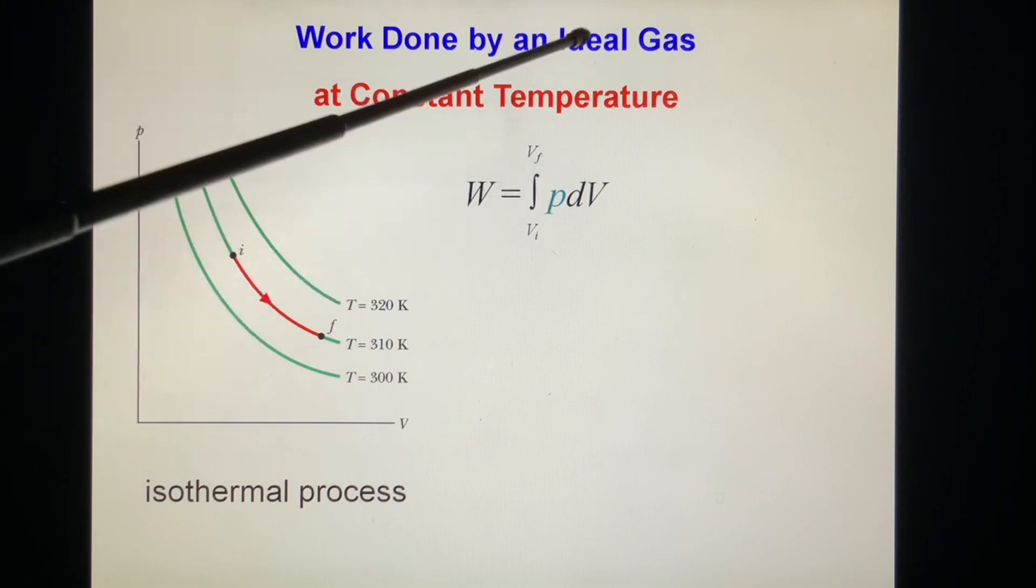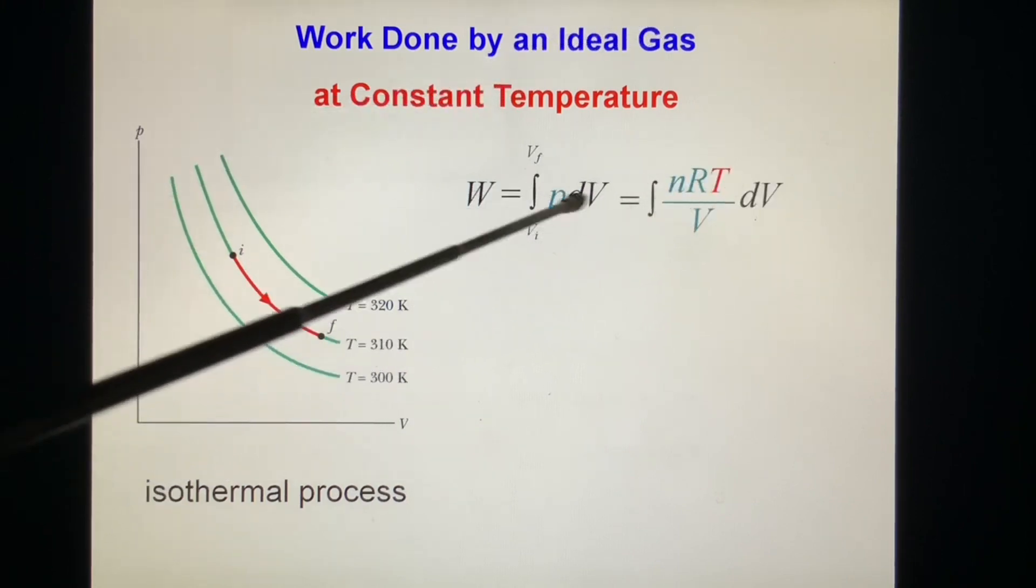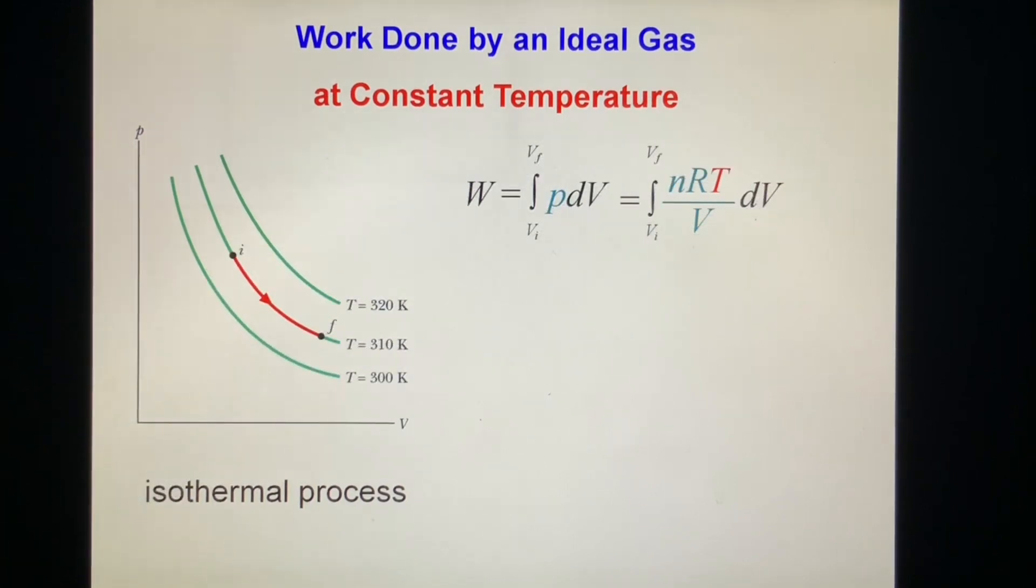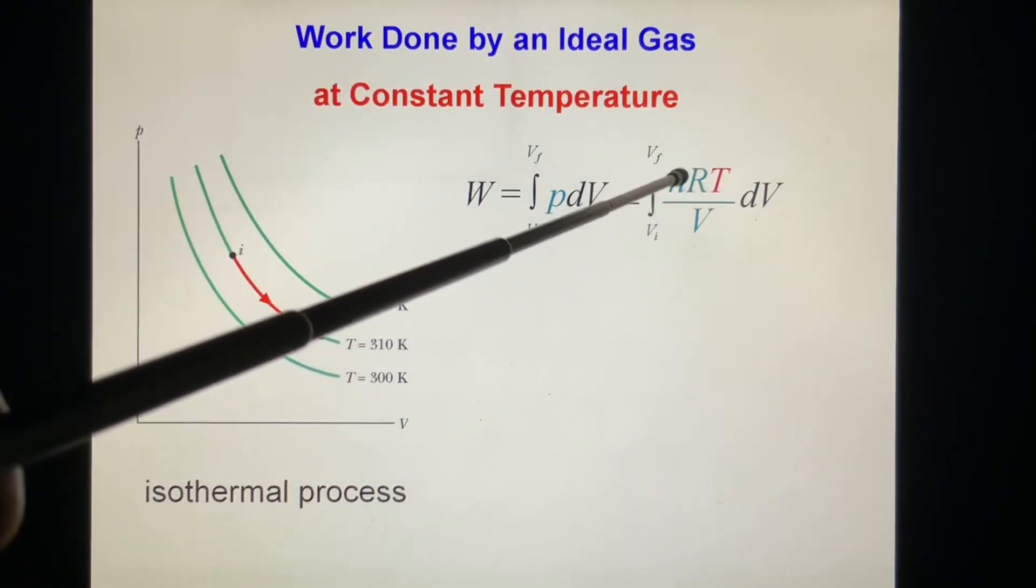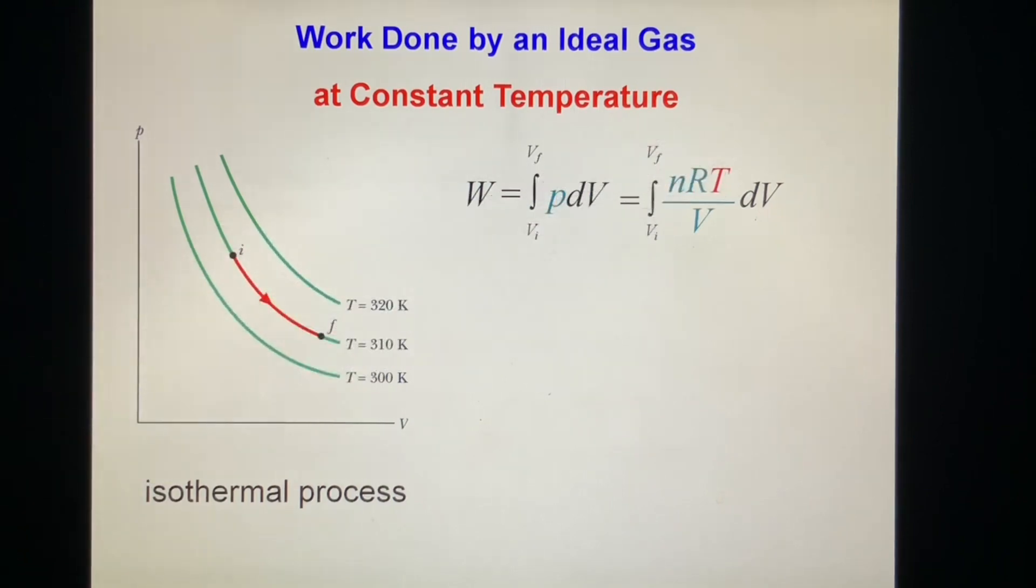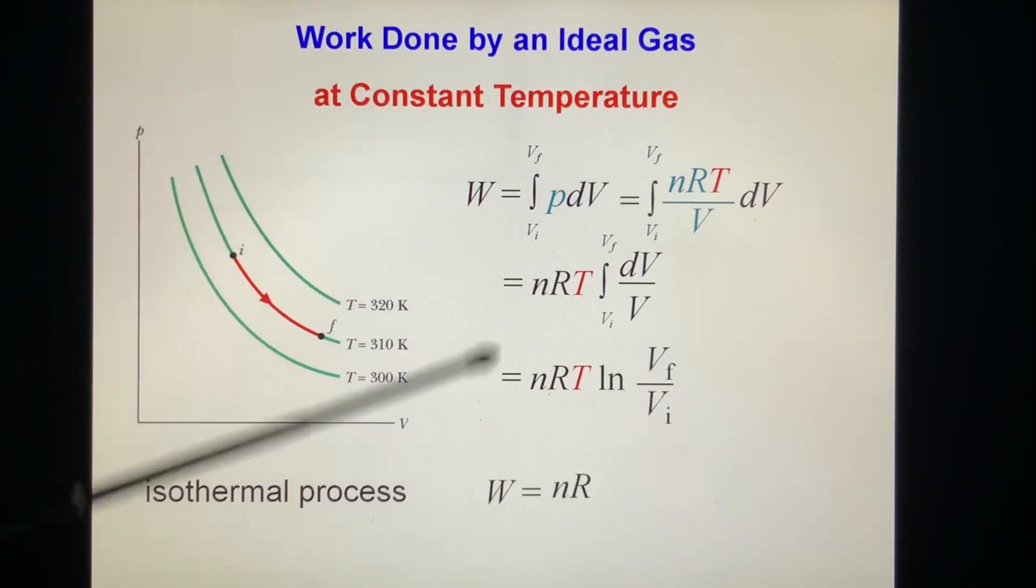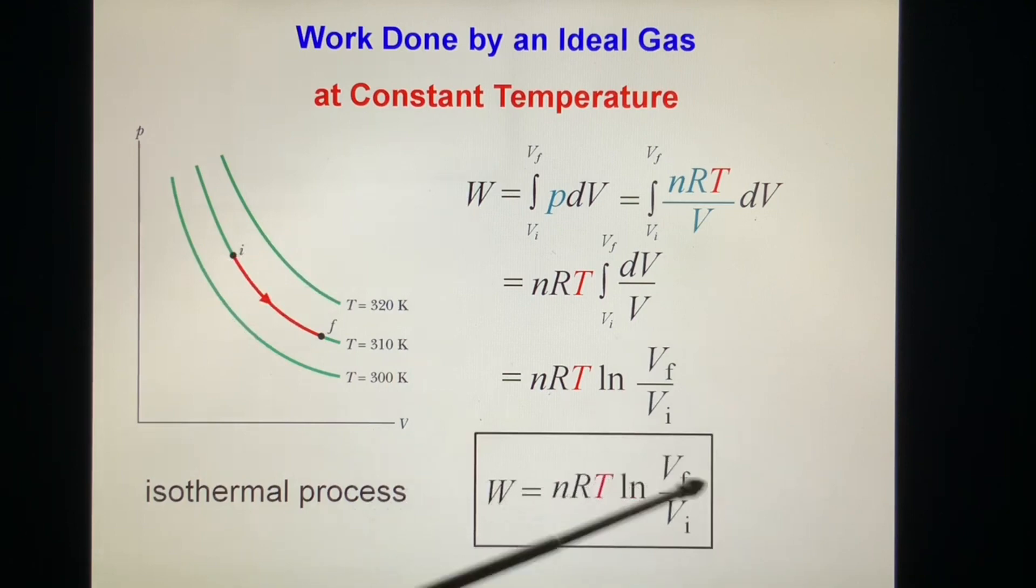The isothermal process has a feature. The work done by definition is W equals the integral of PdV, integration from Vi to V final. And at constant temperature, P always obeys the ideal gas law: P equals nRT over V. So W equals the integral of nRT over V times dV, from Vi to V final. Now, the condition is constant temperature T. So T and R are constant, we take them out of the integration. We get nRT times the integral of dV over V from Vi to V final. Now this integration is very easy, it's log of V. So we put V final and Vi in, we get it. Work done by an ideal gas at constant temperature: W equals nRT log of V final over V initial.